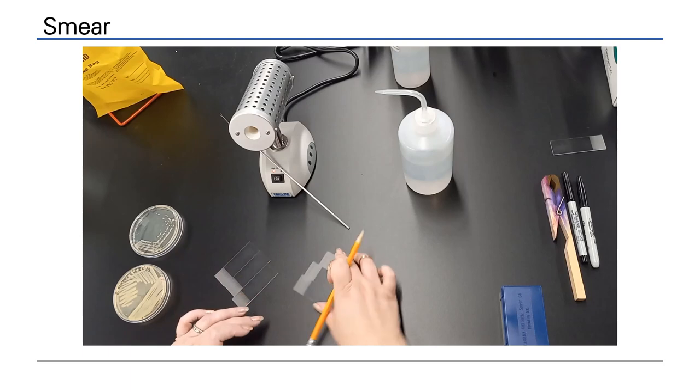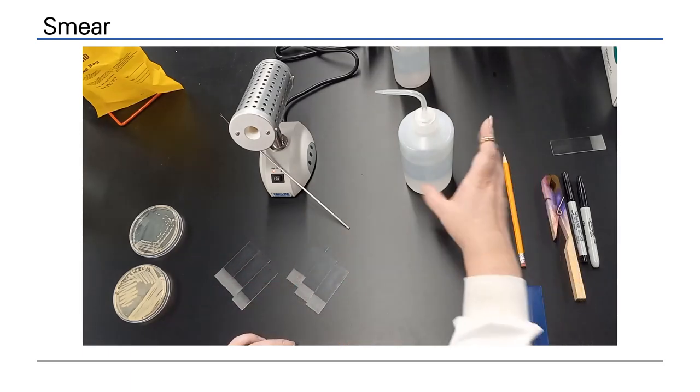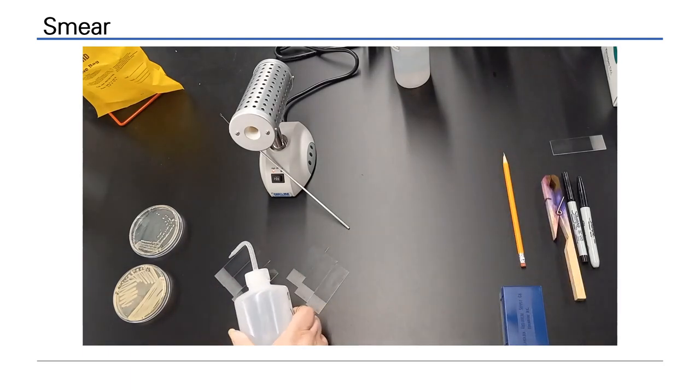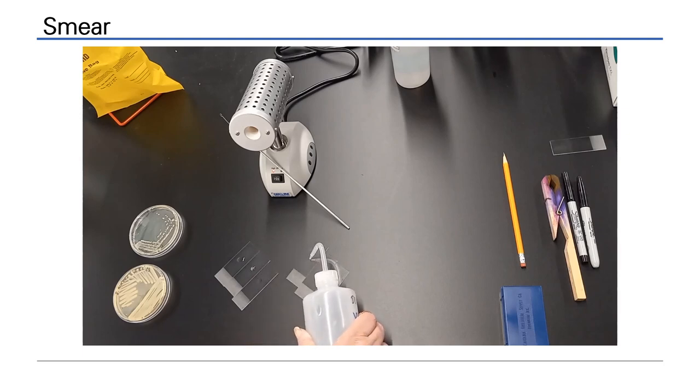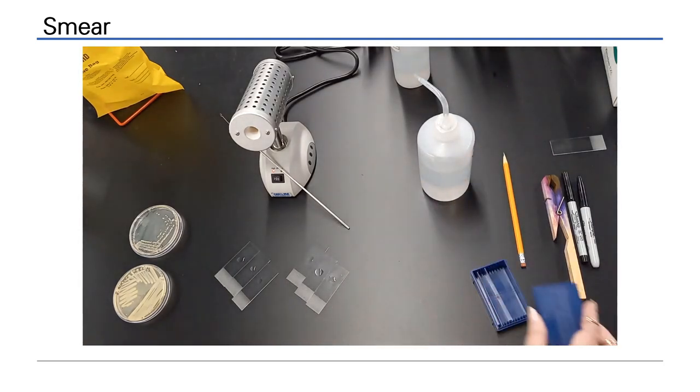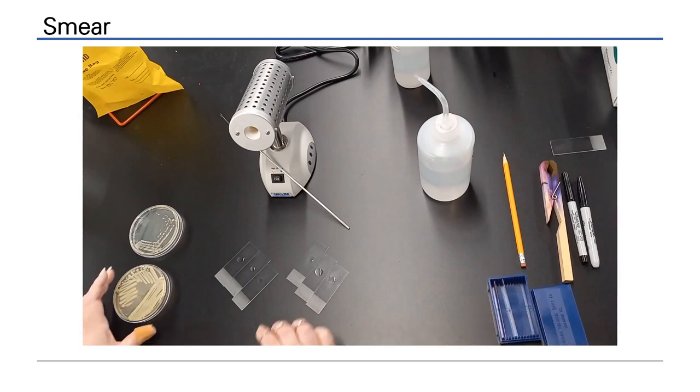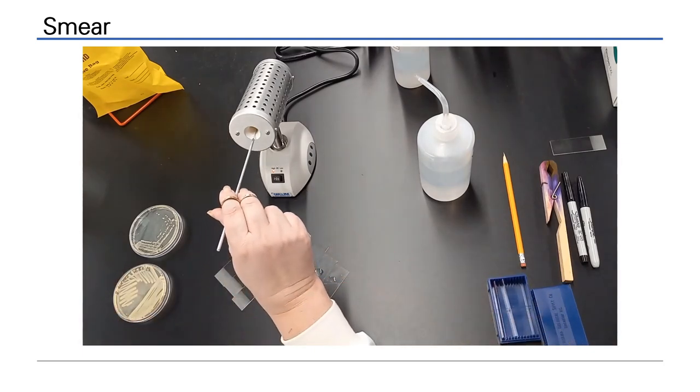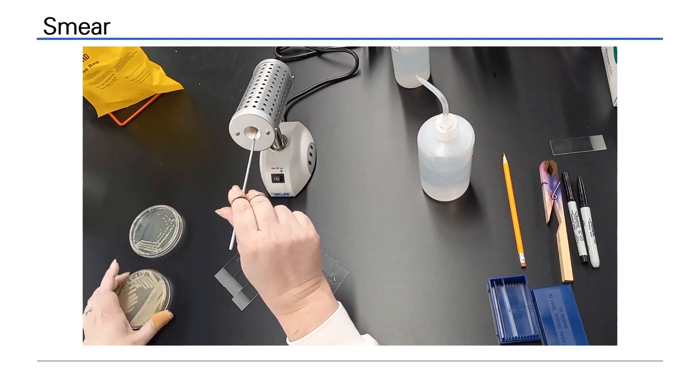A smear is a technique used to inoculate a microscope slide with a monolayer of cells from your specimen. We start with clean labeled slides. Apply a small drop of distilled water to the center of each slide. It is usual to make multiple smears from the same specimen at the same time. This is the most efficient way as moving downstream you will want to stain multiple slides at once.